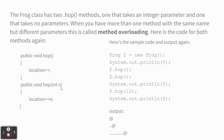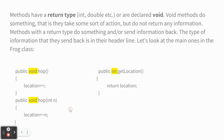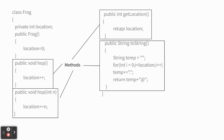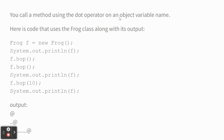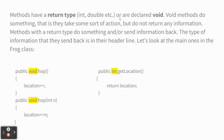Every method either returns some data or it's declared void, which means it doesn't return any data. When you call hop, it doesn't send anything back. But if you call getLocation, notice the header says 'public int' — that tells you it's sending back an int. Methods have a return type: an int, a double, a string — a method could even return a Frog. Void just means nothing is coming back.